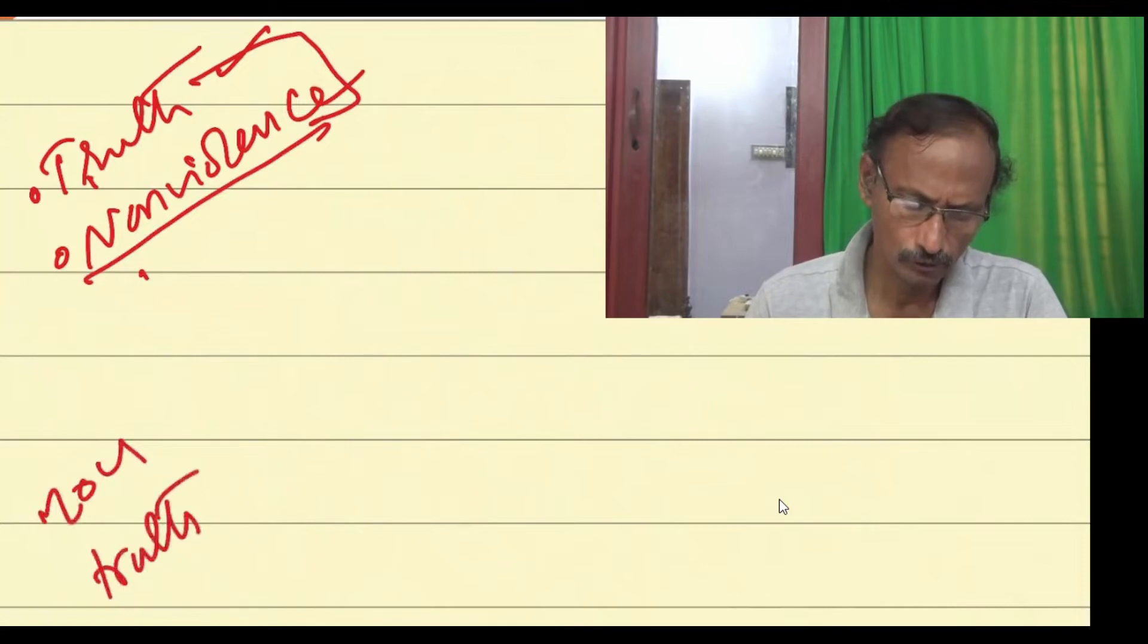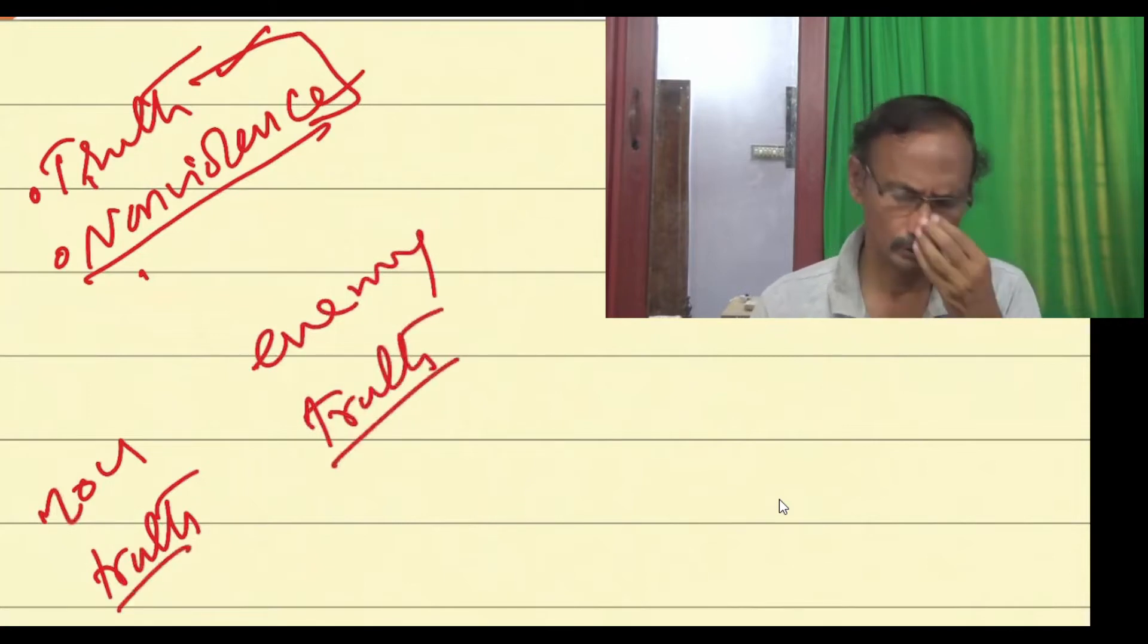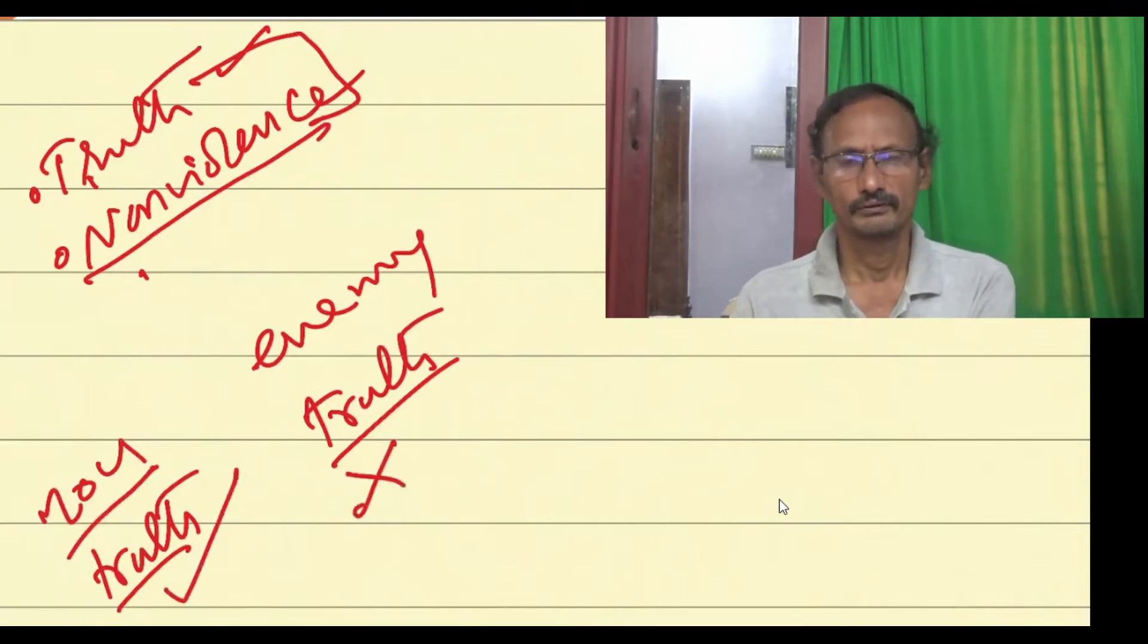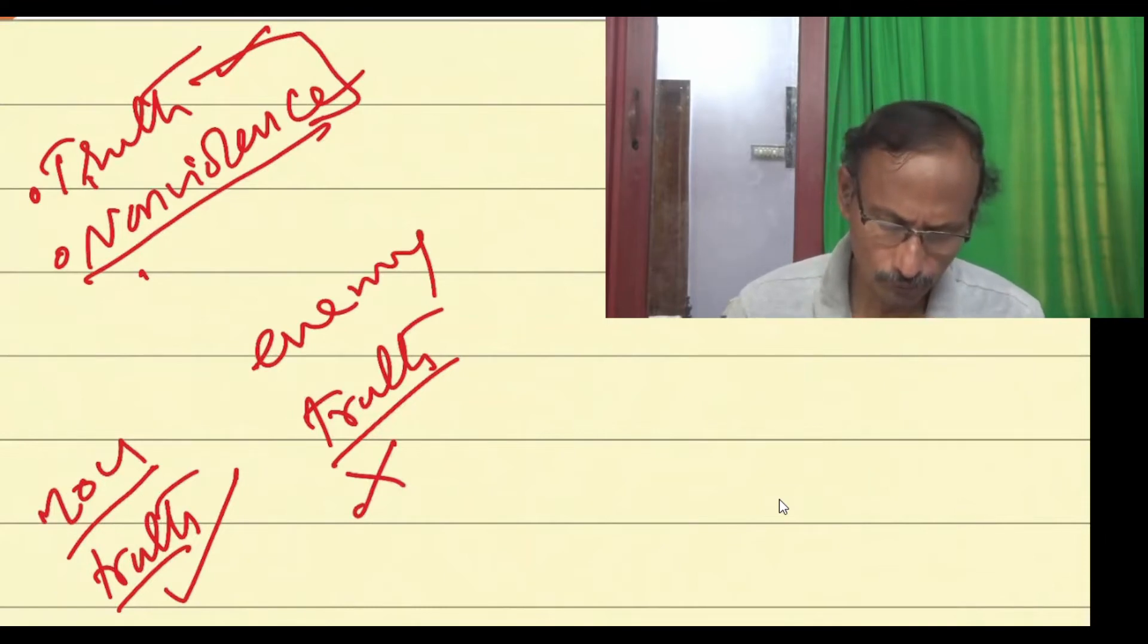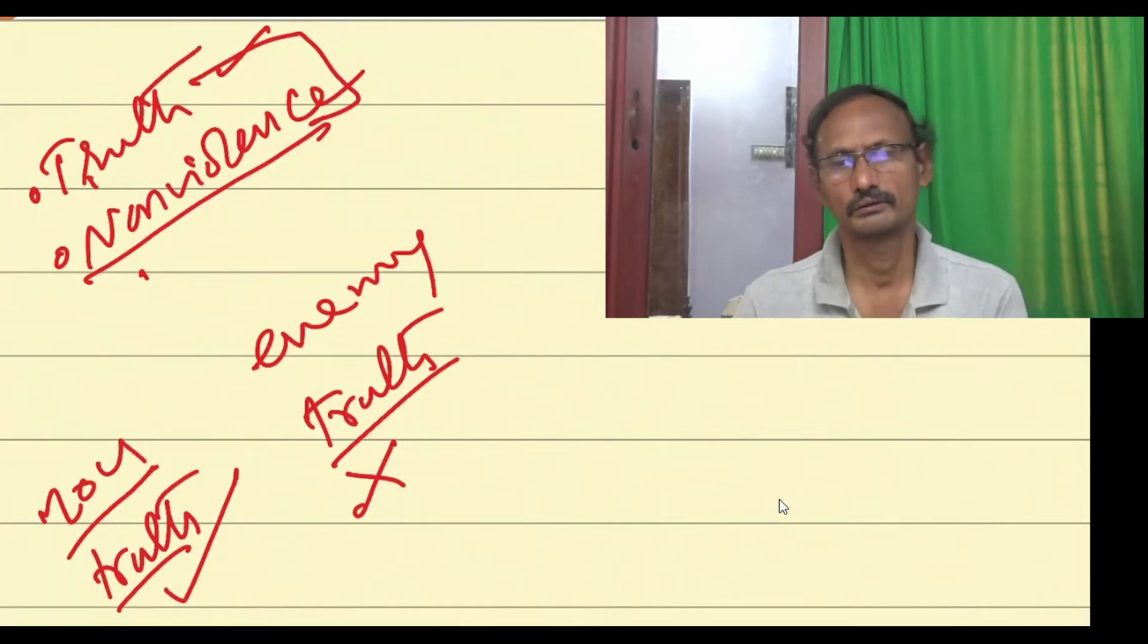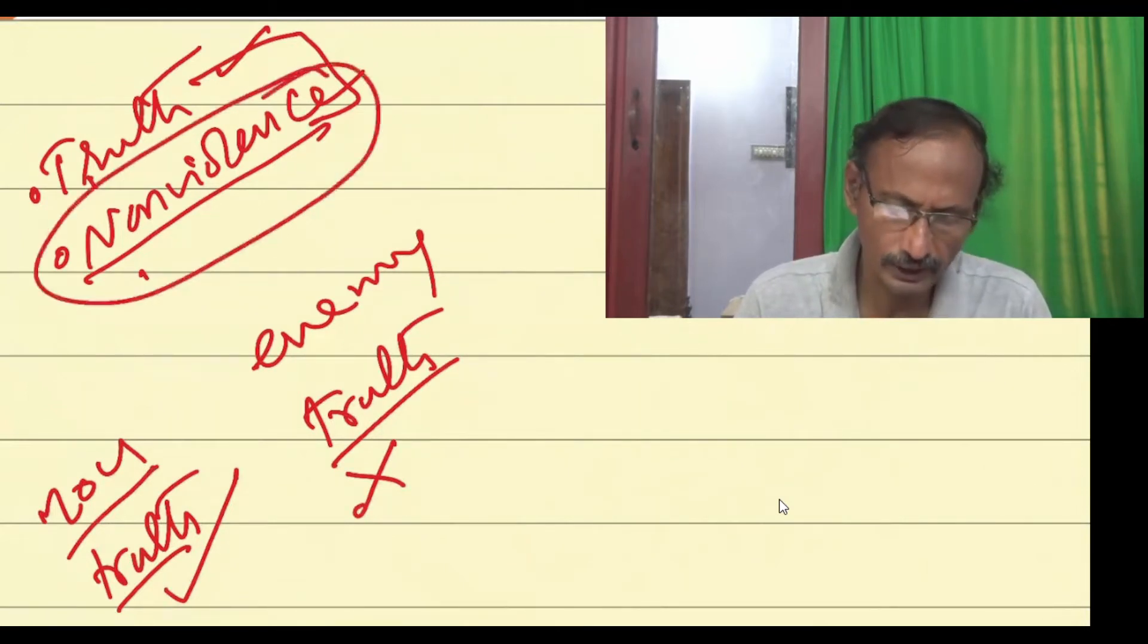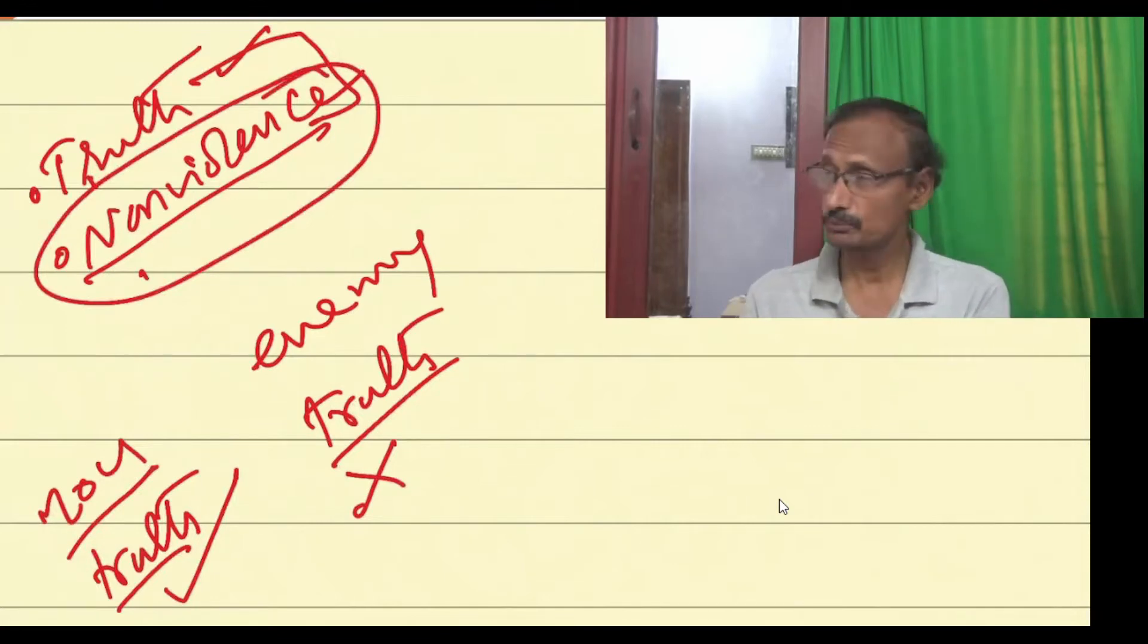One of the things about truth is that you don't have monopoly over truth. You have truth and the other, your enemy, may also have truth. Here we are referring to truth as a position, a viewpoint. If you are doing non-violently, you are trying to convince the other, and maybe in this process you see the other's viewpoint.